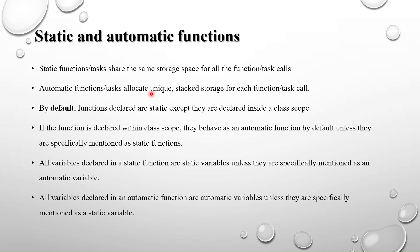By default, functions are static, except when declared inside a class scope. If you mention the 'automatic' keyword with the function, it becomes an automatic function; otherwise it is static by default. If the function is declared within a class scope, it behaves as automatic by default unless specifically mentioned as static.